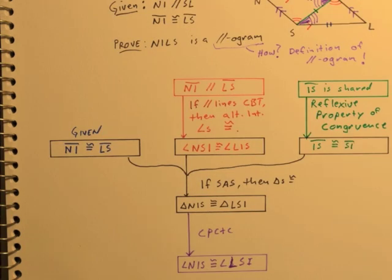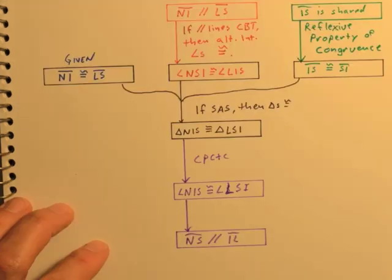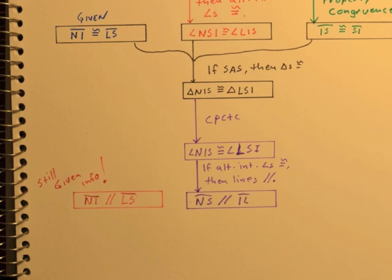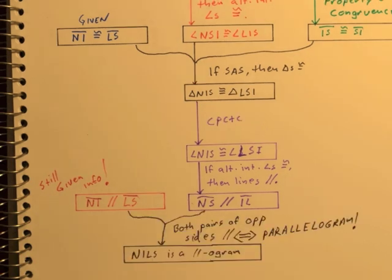CPCTC says the angles are congruent, which means the segments opposite them are parallel. We're still given that NI is parallel to LS. Now we have two pairs of parallel sides, which means it is indeed a parallelogram. By the way, instead of writing all that out, if you just wrote 'definition of a parallelogram,' that would be sufficient as well.